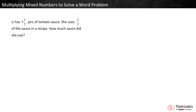Let's solve a new problem with an area model. Lee has four and a half jars of tomato sauce. She used two-fifths of the sauce in a recipe. How much sauce did she use? We need to find two-fifths of four and a half. To find part of something, we use multiplication. So we can write the expression two-fifths times four and a half to represent this problem.